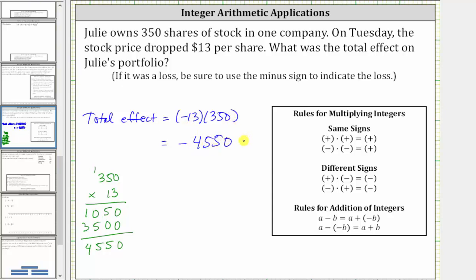And the units here would be dollars, which indicates Julie has a loss of $4550 from the drop of $13 per share since she owns 350 shares.